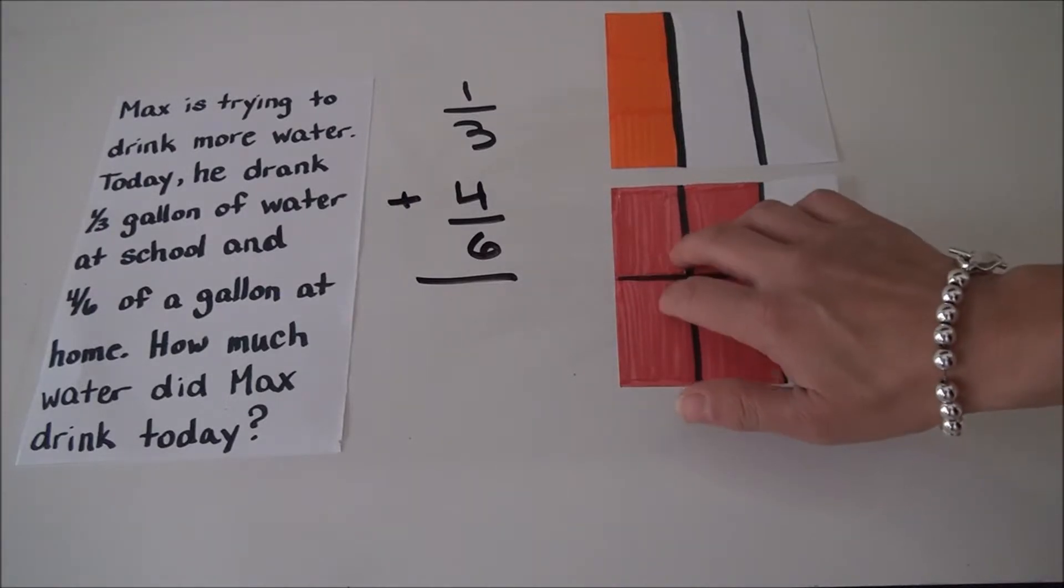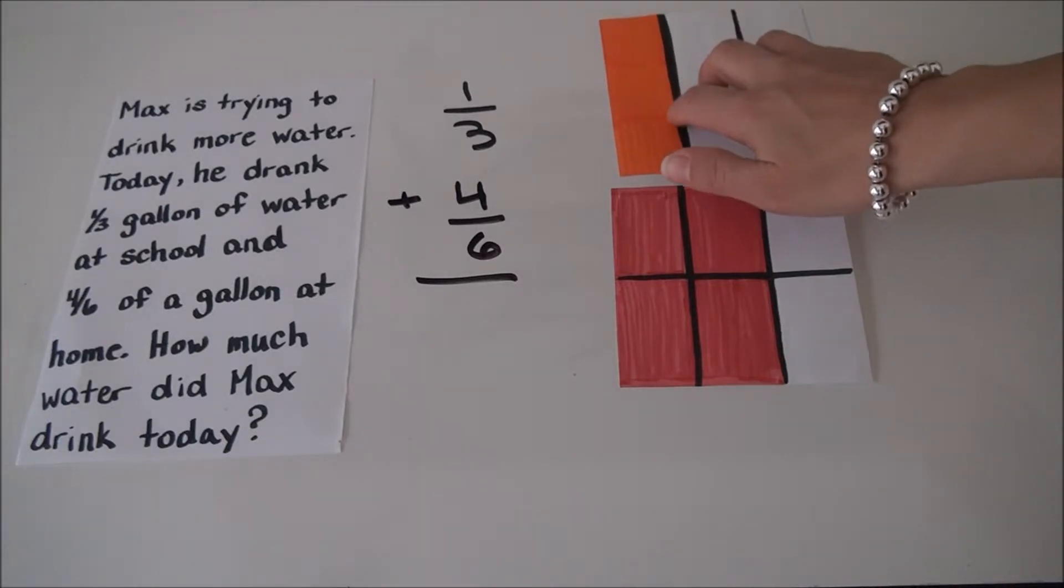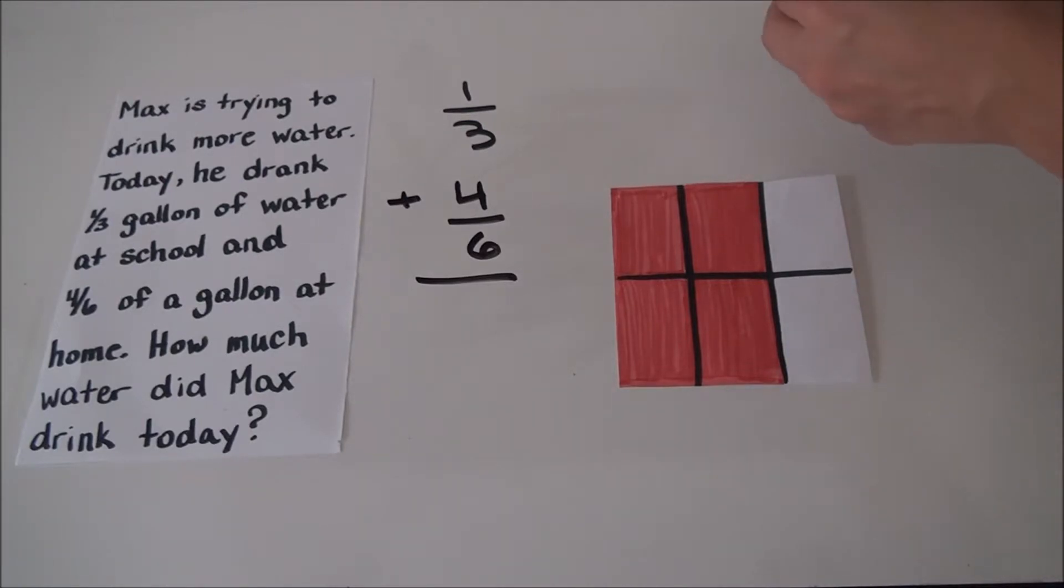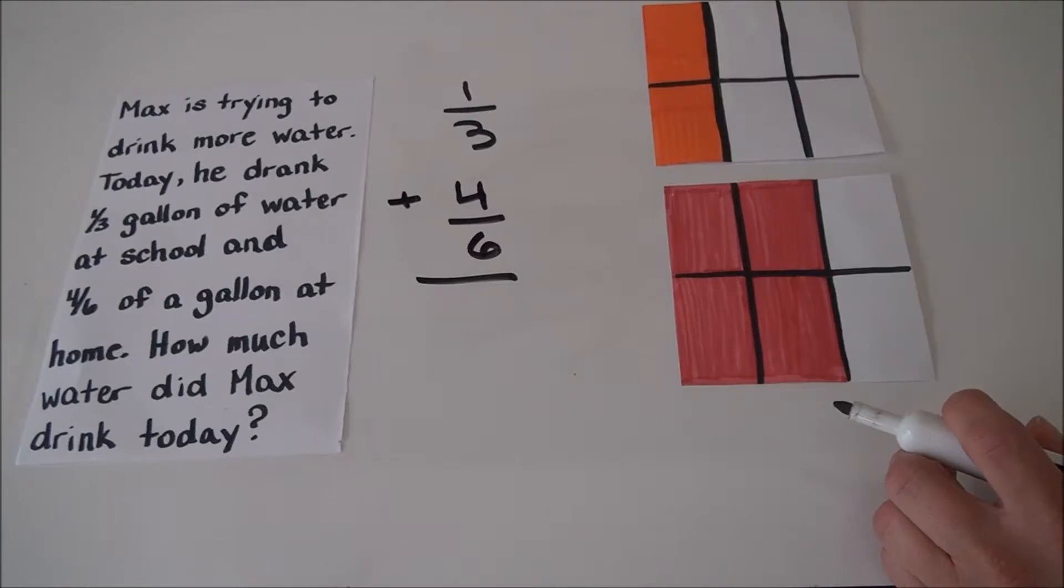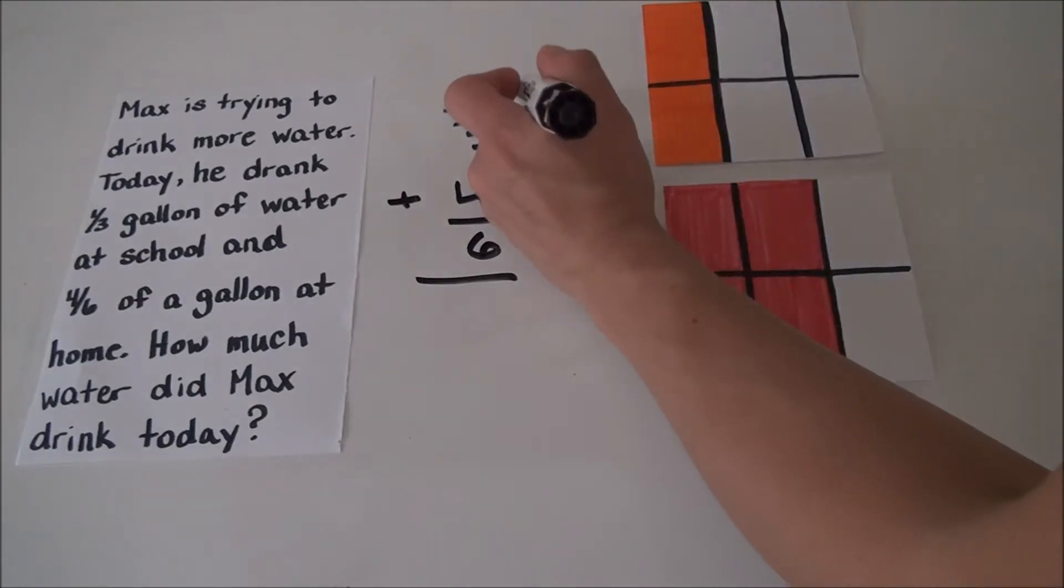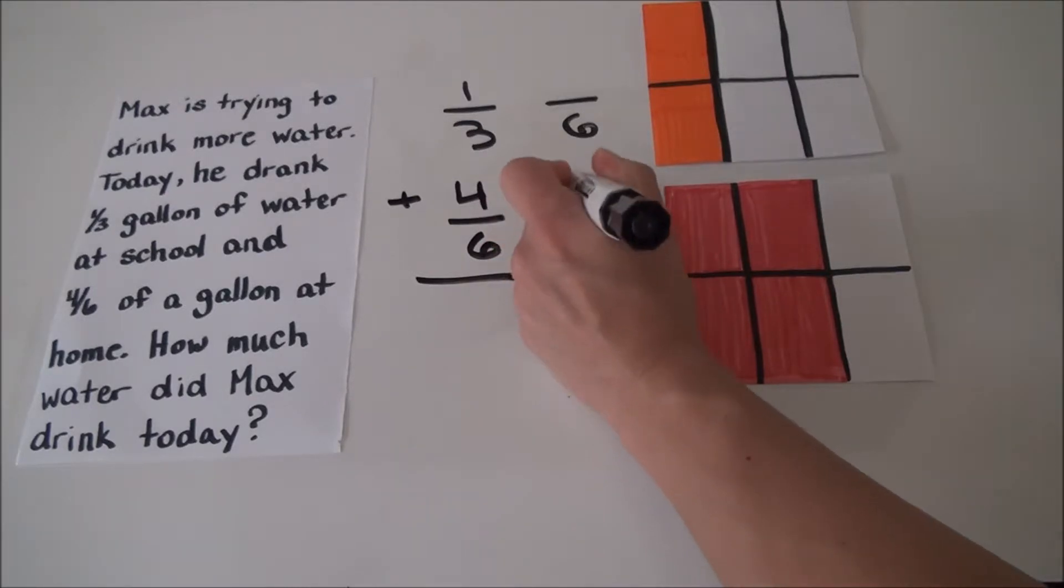I know that six and three are related. In fact, I know six is a multiple of three. Let's see. If I double the parts in this fraction, one-third, my denominator will change from thirds to sixths. Now, six is my denominator. Six is my common denominator.